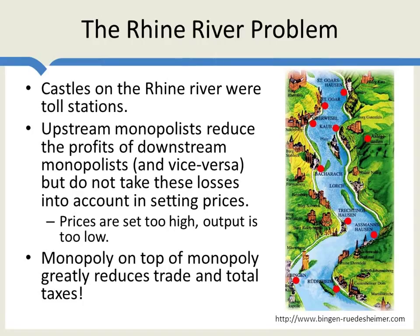The problem is that the upper river monopolists — the upper river castles — the more that they charged, the less were the revenues for the downstream monopolists. But the upstream monopolists don't care about the downstream monopolists, so they would set their prices really high in order to make a lot of money, not taking into account the fact that this would reduce the profits of the downstream monopolists.